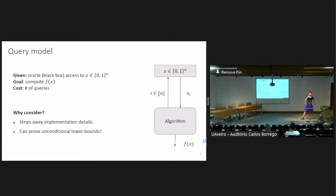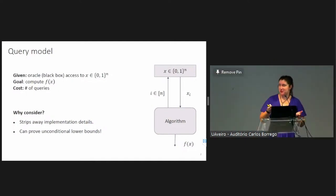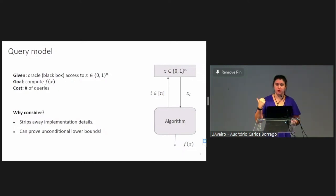If the function is Boolean, we say that the algorithm should accept the input if the value of the function is one and should reject if the value is zero. We like to consider this kind of model because first, it strips away implementation details, so you only focus on what parts of the input are essential to read in order to evaluate the function, and another reason is because this is one of the few models where we can prove unconditional lower bounds. For example, this is the model where we can prove Grover's advantage.